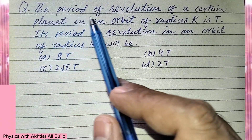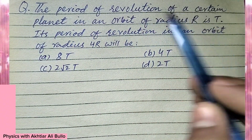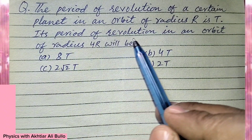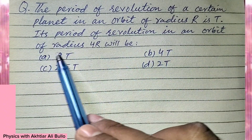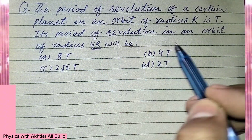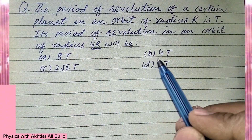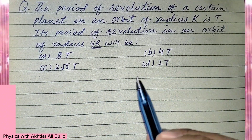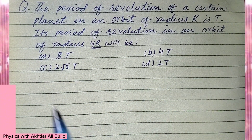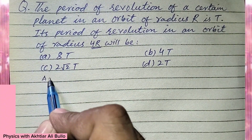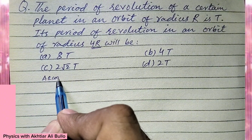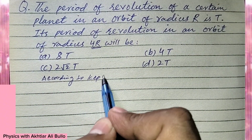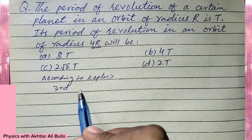The question is: the period of revolution of a certain planet in an orbit of radius r is t. Its period of revolution in an orbit of radius 4r will be — (a) 8t, (b) 4t, (c) 2√2t, (d) 2t. According to Kepler's third law,